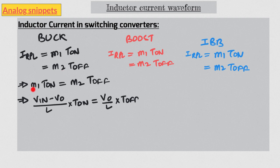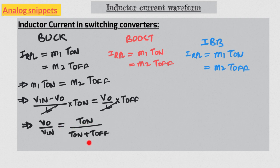To derive the transfer function, we equalize the two values of ripple current and substitute the equations for m1 and m2, using the absolute value of m2 and ignoring the minus sign. L cancels out, and we rearrange to find the transfer function. T-on plus T-off in CCM is simply the switching period, and T-on over the switching period is the duty cycle D of the PWM waveform. I urge you to derive similar equations for boost and IBB as well.